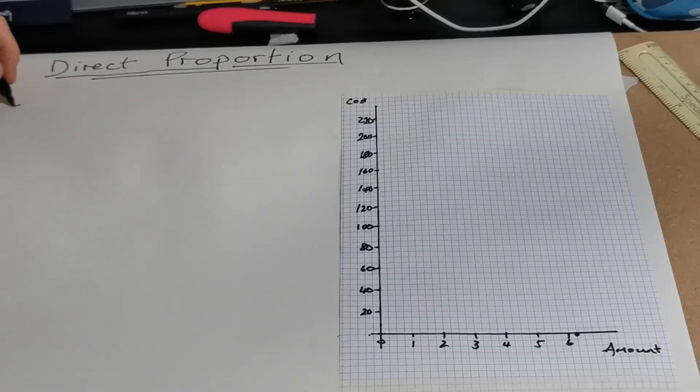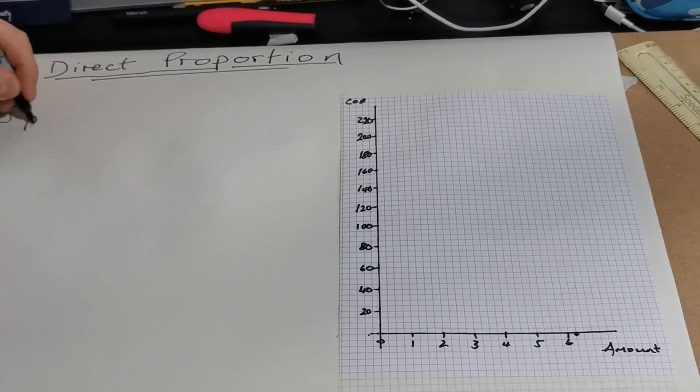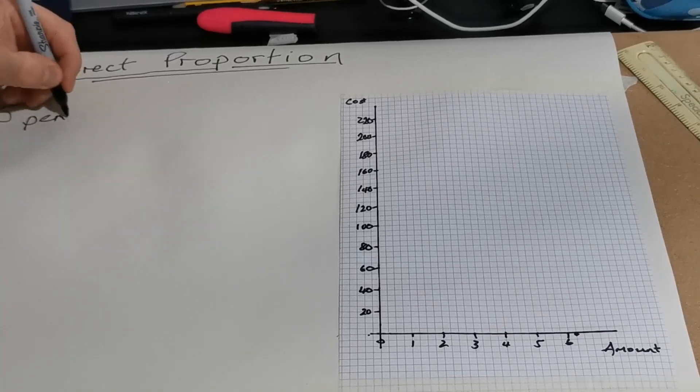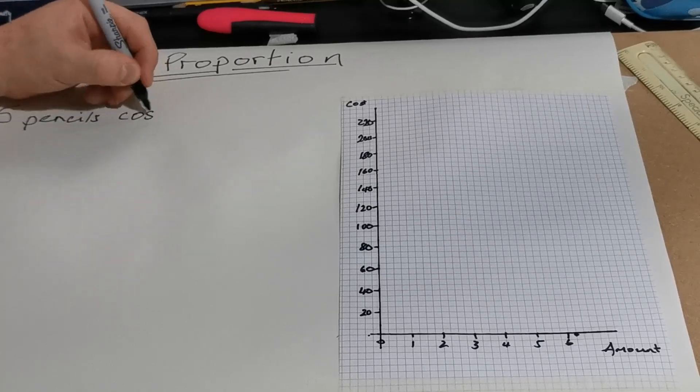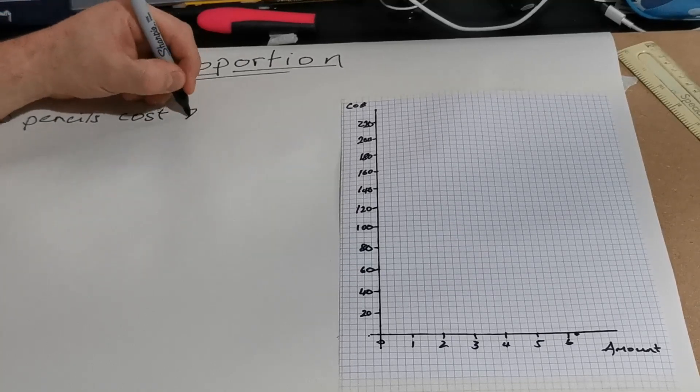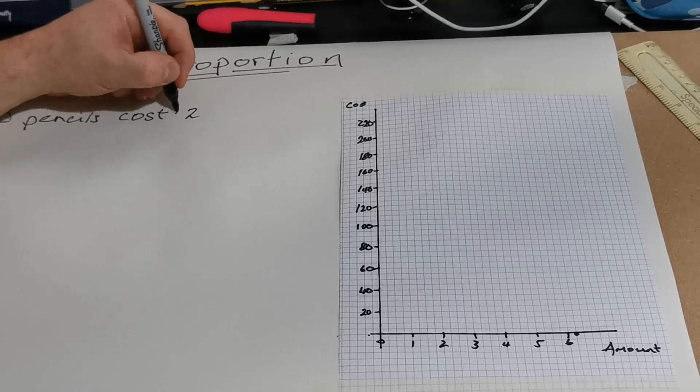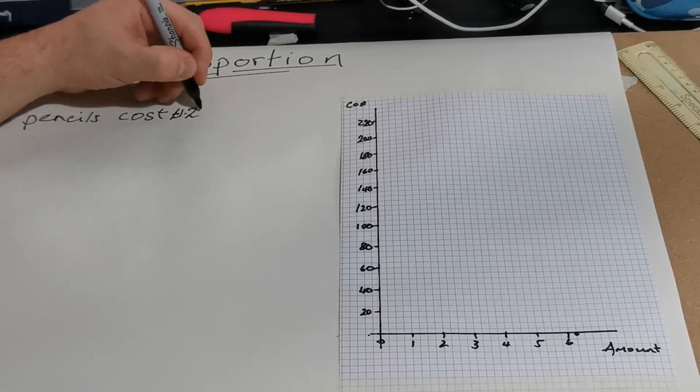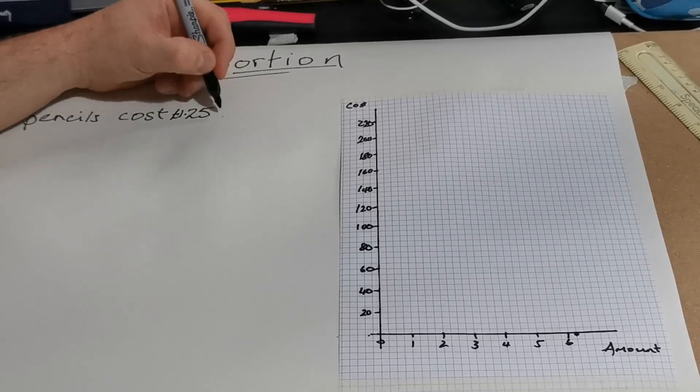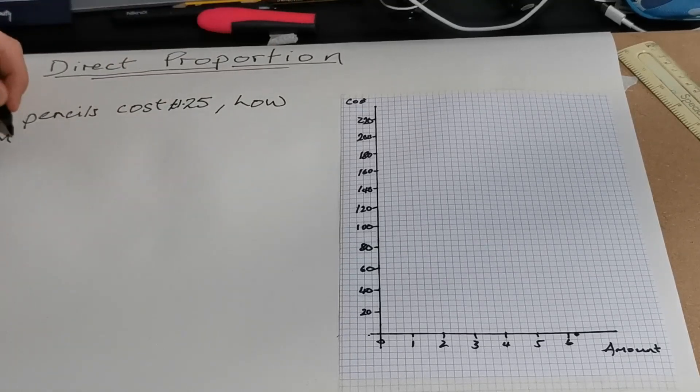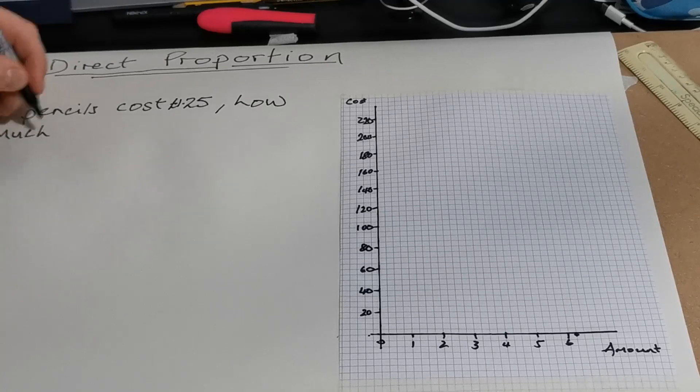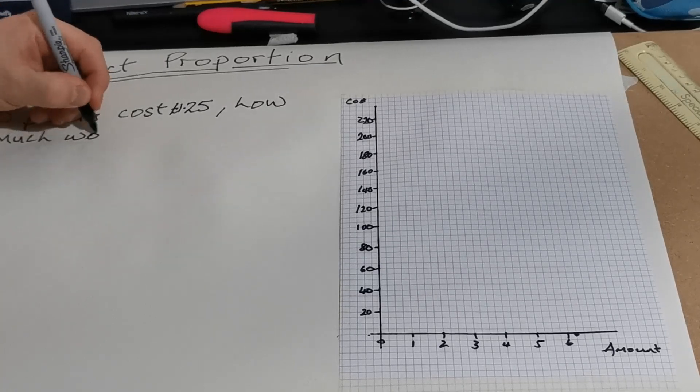Now an example of a direct proportion question is if I said five pencils cost £1.25, how much would seven cost?